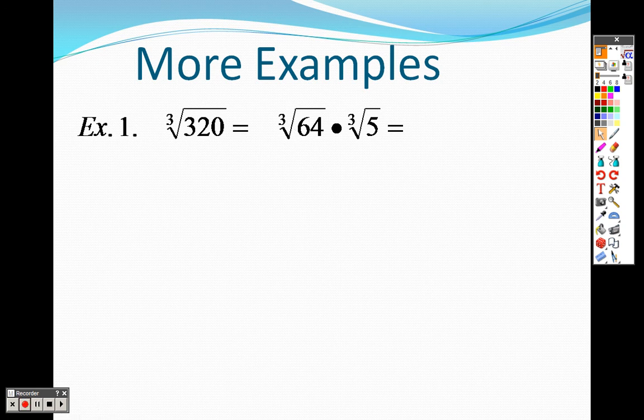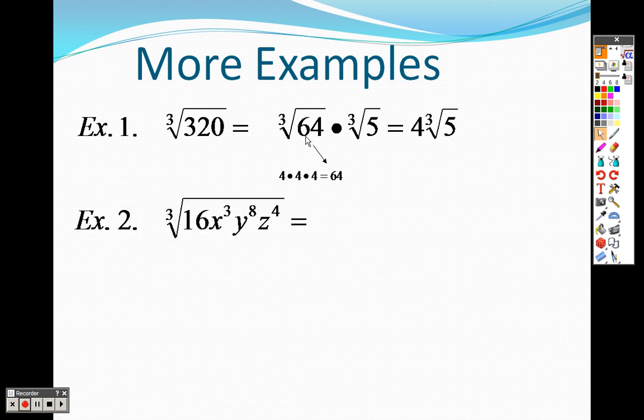The cube root of 64 is 4. 4 times 4 times 4 is 64. So this can actually simplify to 4, because 4 times 4 times 4—three numbers that are exactly the same—give you 64. That means we get 4 cube root of 5. When we come back, we will continue on with example 2.